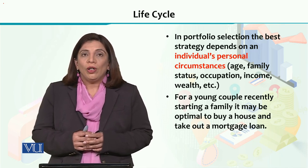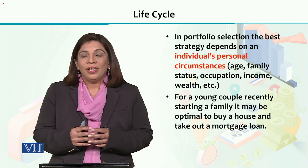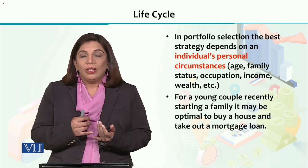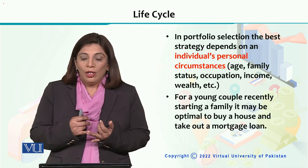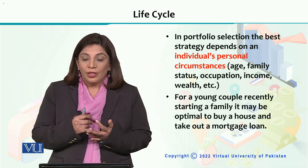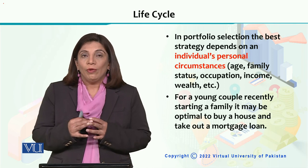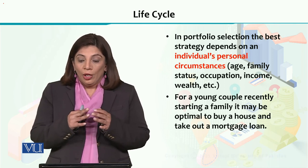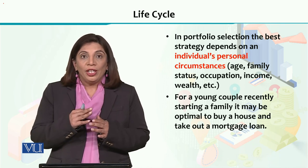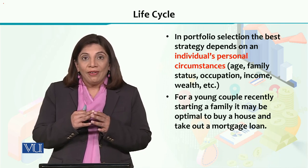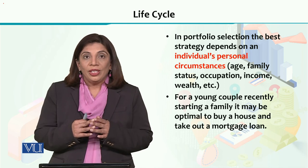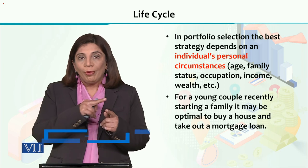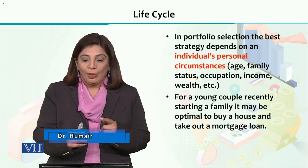If we look at the overall characteristics of the life cycle a person has, there can be certain factors such as the age of that particular individual, the family status, what is his income status, what is his standard of life, what is his occupation, what is his income, and what is his wealth. These things will influence and define his life cycle.